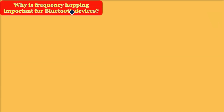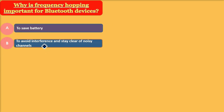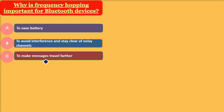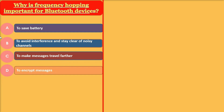Why is frequency hopping important for Bluetooth devices? Options: to save battery, to avoid interference and stay clear of noisy channels, to make messages travel further, to encrypt messages. The correct answer is: to avoid interference and stay clear of noisy channels.